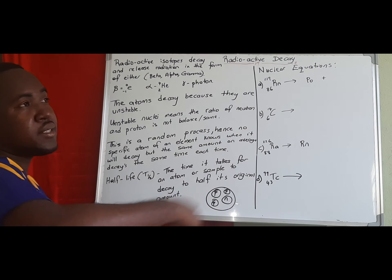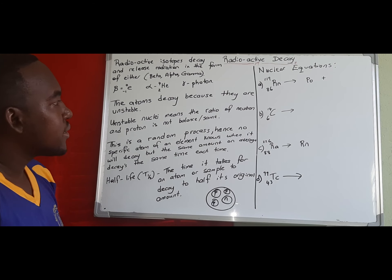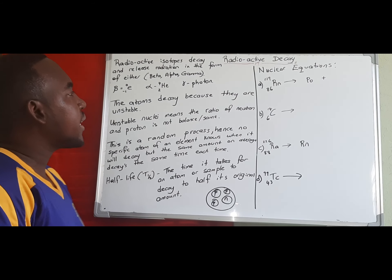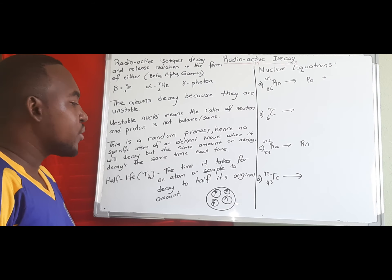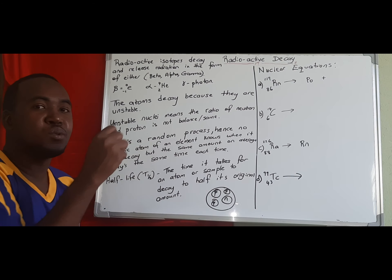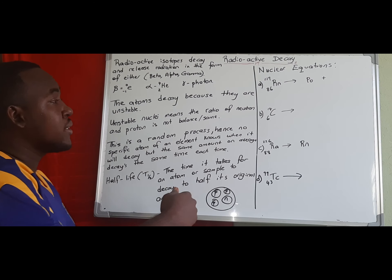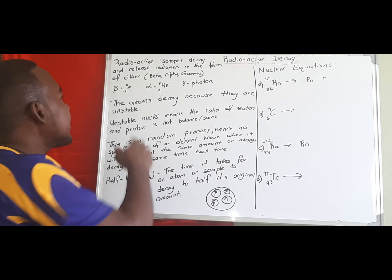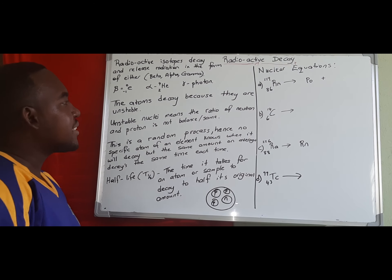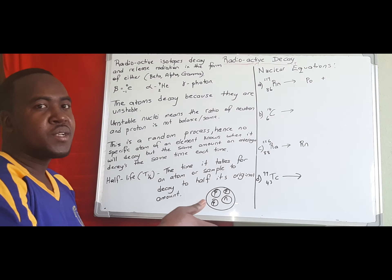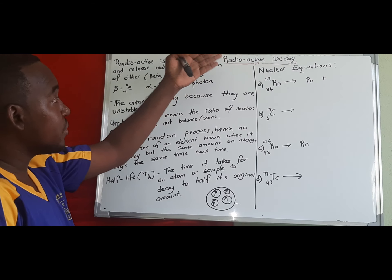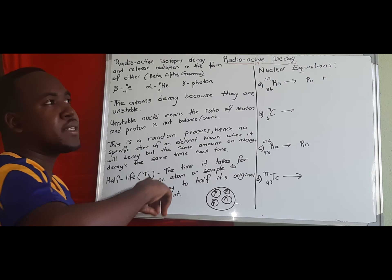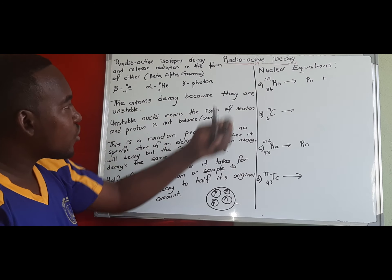To summarize: under 30 emits beta, above 30 emits alpha, and above 80–83 emits gamma. Let's now look at some nuclear equations that show which radiation occurs and which new atom is produced. When the atom splits, a portion of protons and neutrons separate, affecting the mass number and atomic number depending on the radiation type, producing a new element. If that new atom is unstable, it continues to decay until it becomes stable.